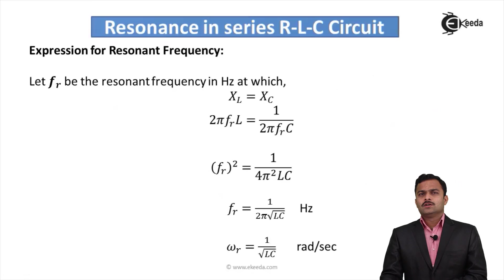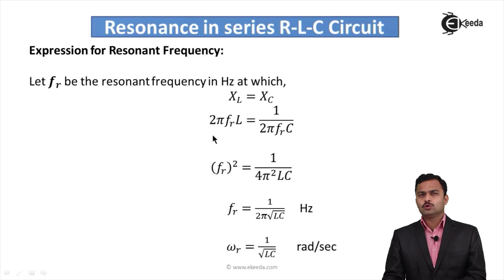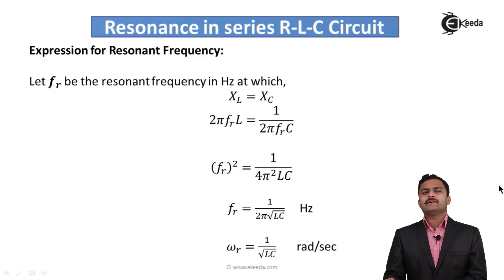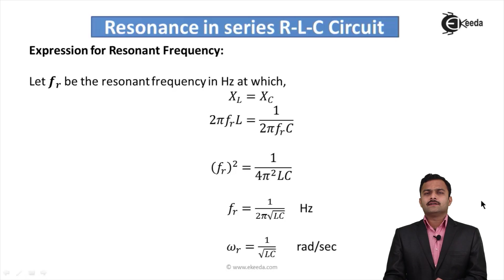Let's derive the expression for resonating frequency. Let fr be the resonating frequency in hertz at which XL equals XC. So 2πfr·L = 1/(2πfr·C). Solving, fr² = 1/(4π²LC), and taking the square root: fr = 1/(2π√(LC)) hertz. The same frequency in radians per second is ωr = 1/√(LC) rad/s.